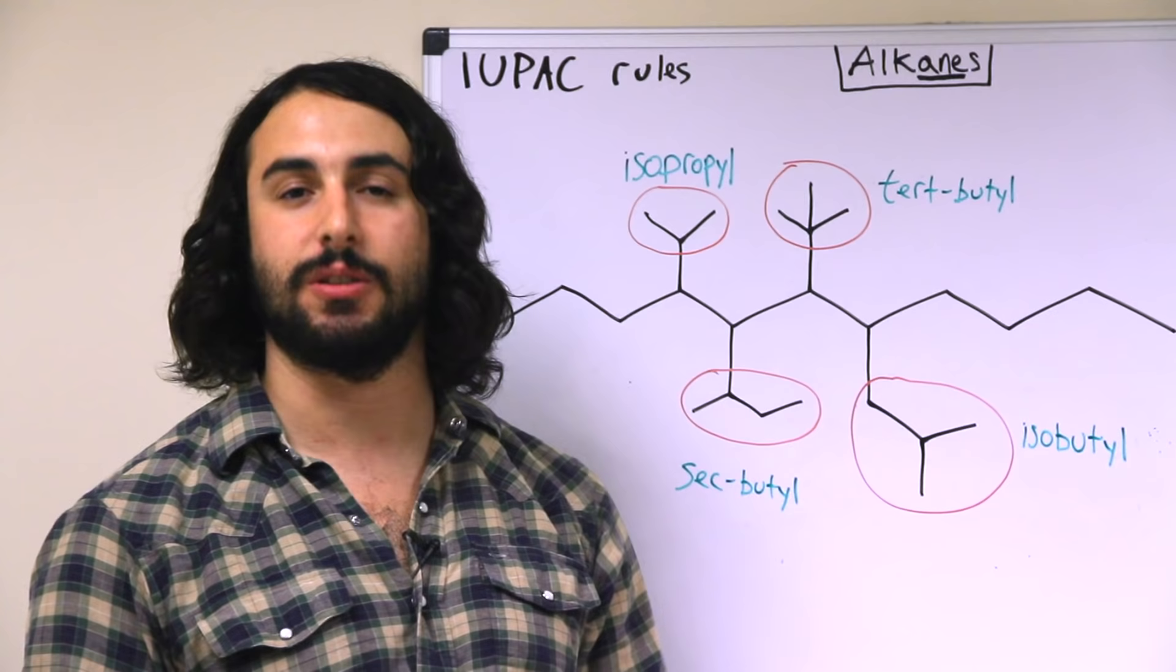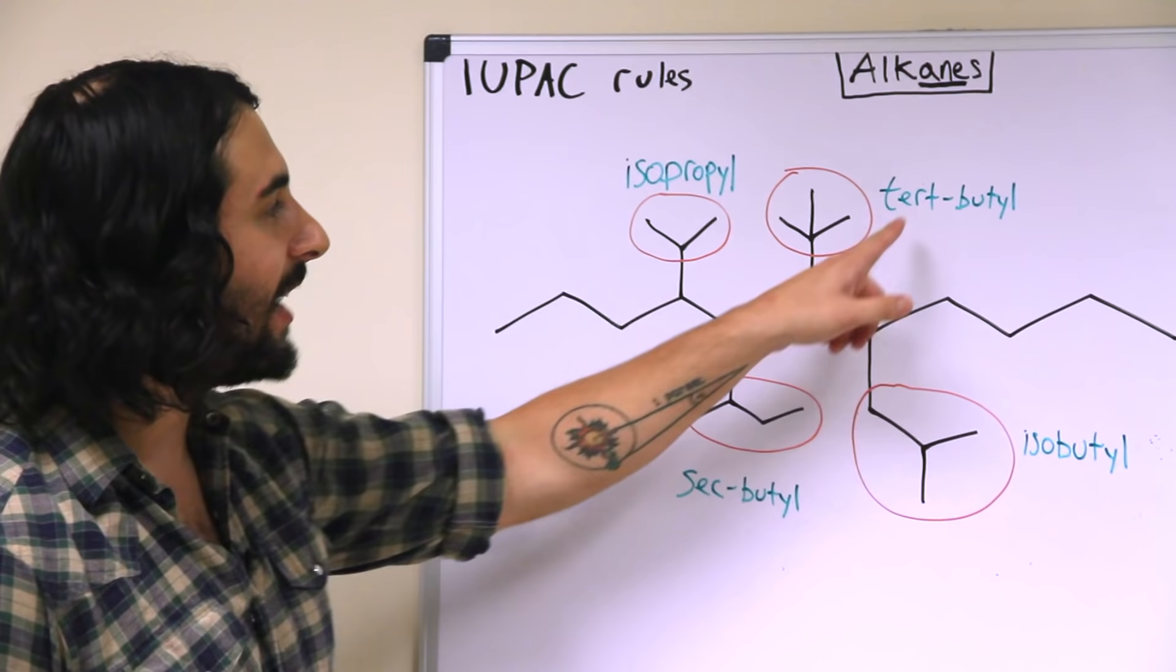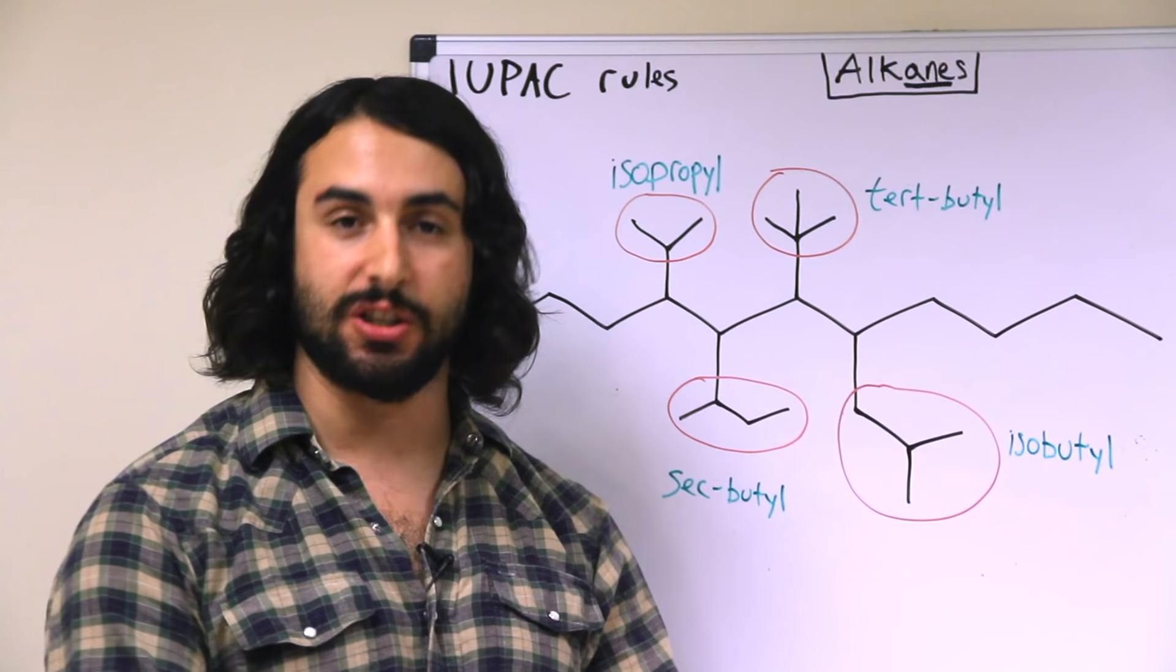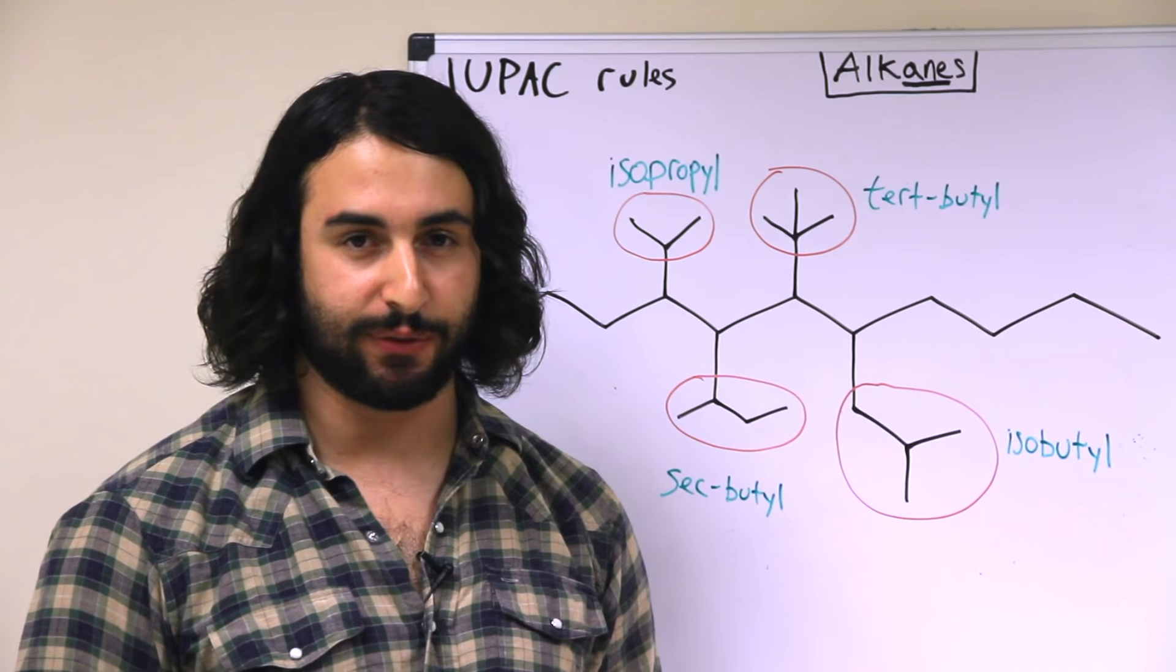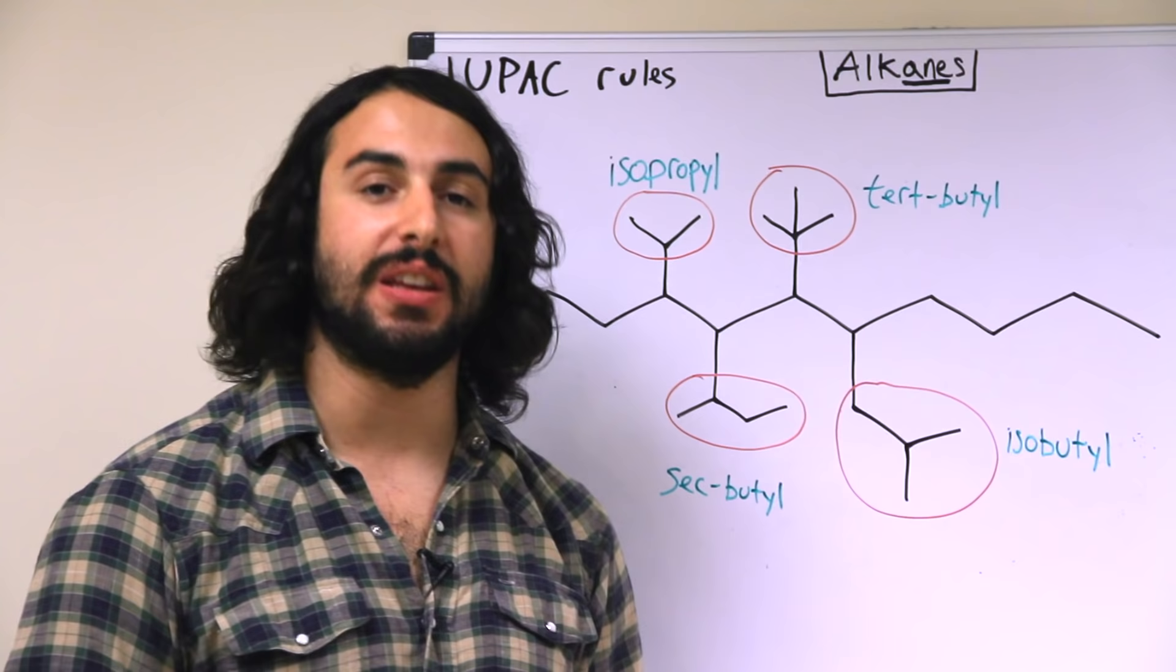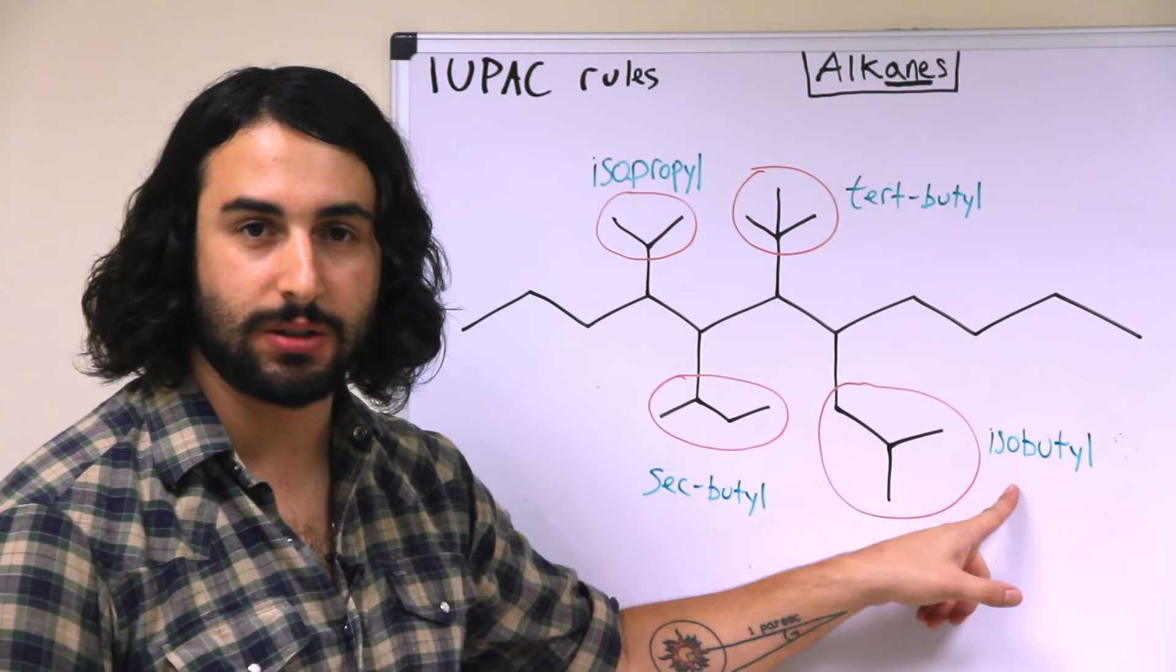So these are some common names for a few alkyl substituents that we're going to have to know because they come up a lot. Now one other interesting point about this is that sec and tert are prefixes that, just like di- and tri-, are not taken into account for alphabeticity, so sec-butyl is B for butyl. But for some reason, and I really honestly have no idea why, the prefix iso is taken into account for alphabeticity, so isopropyl is I for isopropyl, not P for propyl. So just keep that in mind for alphabeticity what iso is doing, but all of the other ones you do disregard the prefix for alphabeticity.